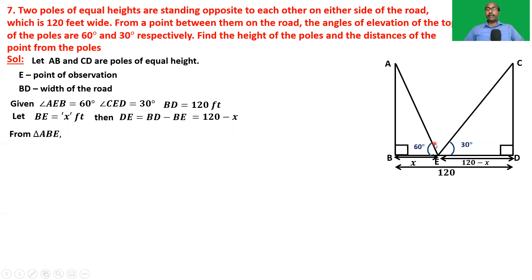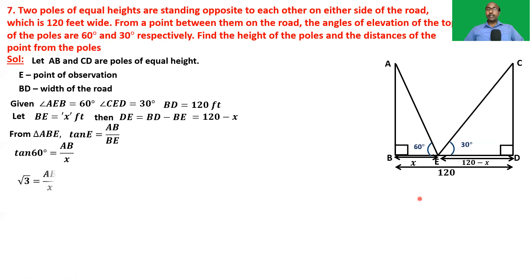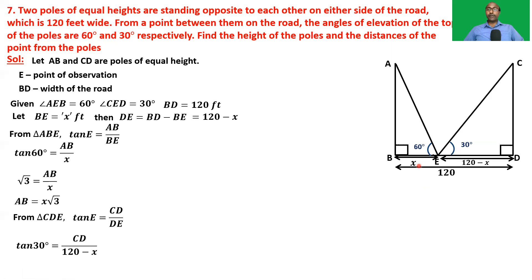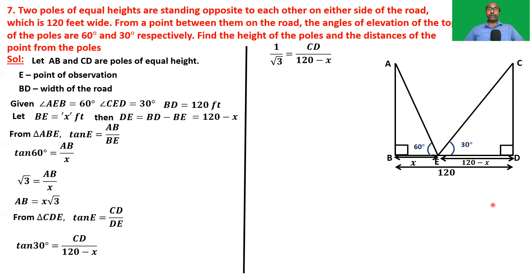From triangle ABE: tan E = AB/BE, so tan 60 = AB/x, giving AB = x√3. From triangle CDE: tan E = CD/DE, so tan 30 = CD/(120 − x), giving 1/√3 = CD/(120 − x), so CD = (120 − x)/√3.